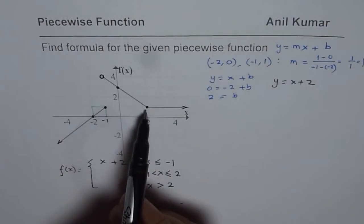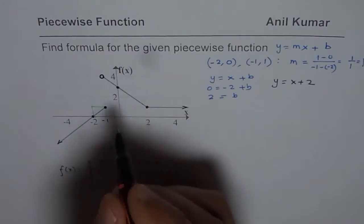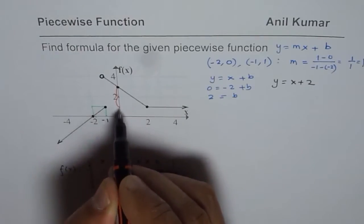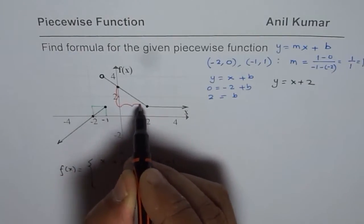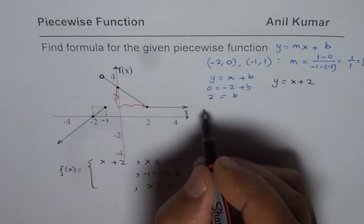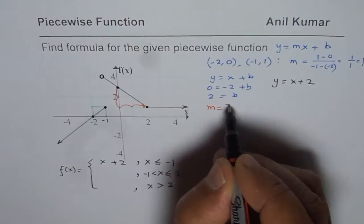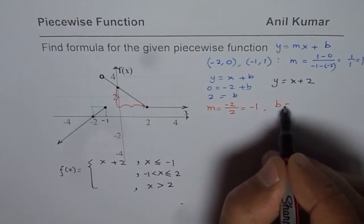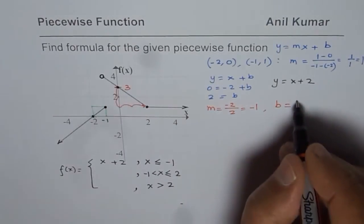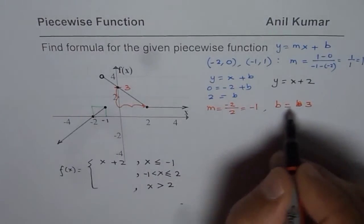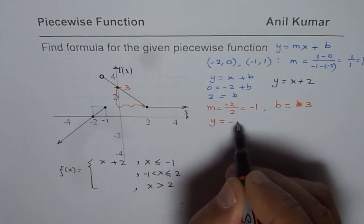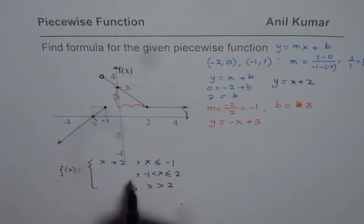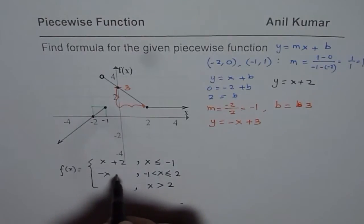Now let's get the equation of the second function. Taking the slope directly from the graph, the rise is going down by two units and the run is two units positive, so the slope is minus two over two which equals minus one. The y-intercept b is three, so we can write this equation as y equals minus x plus three.